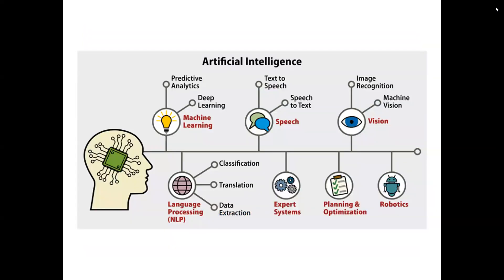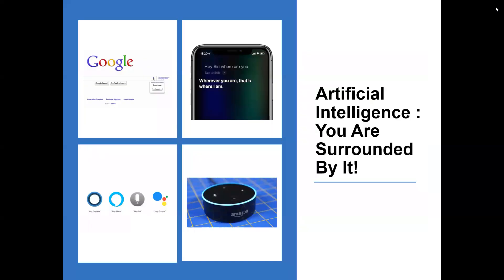Artificial intelligence starts with deep learning and predictive analytics that gives you machine learning. It also includes speech — text-to-speech and speech-to-text — as well as image recognition and machine vision. It has natural language processing where data can be classified, translated, and extracted, plus expert systems, planning and optimization, and robotics.